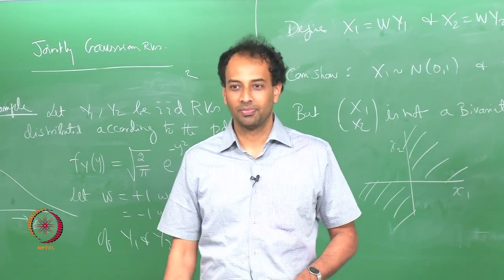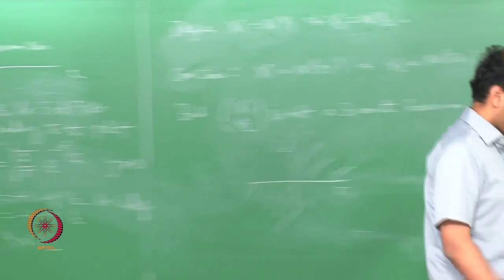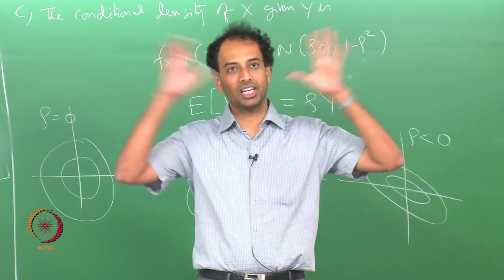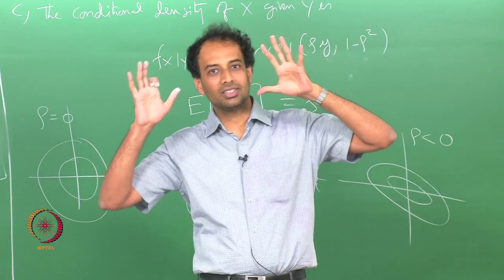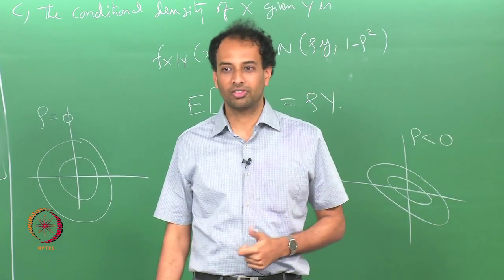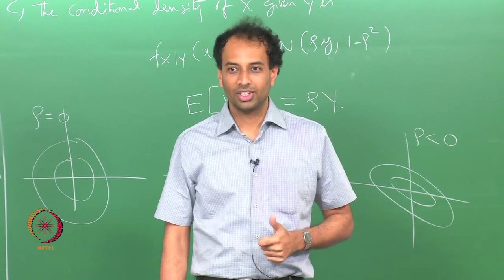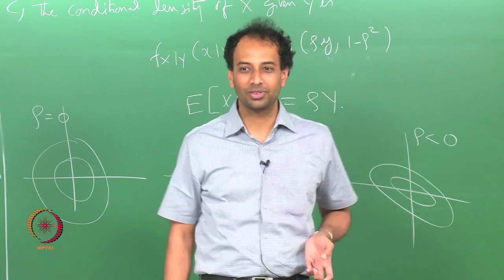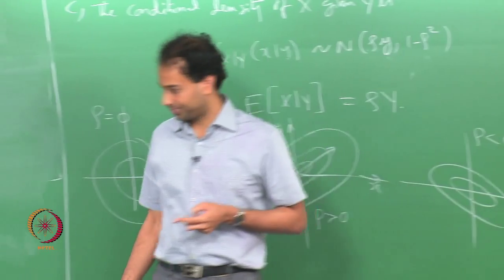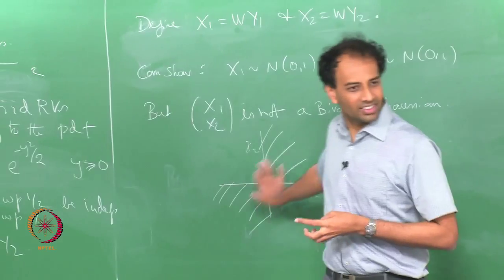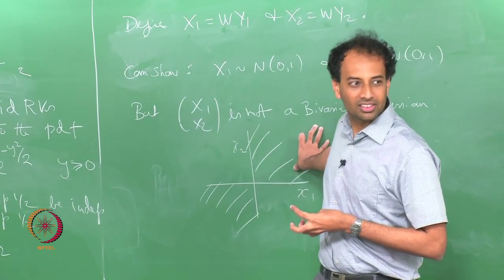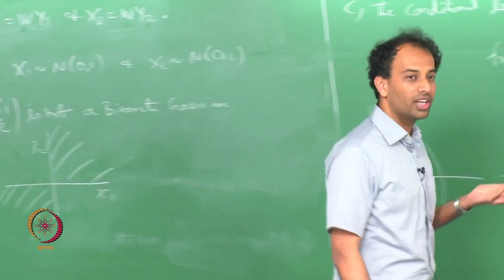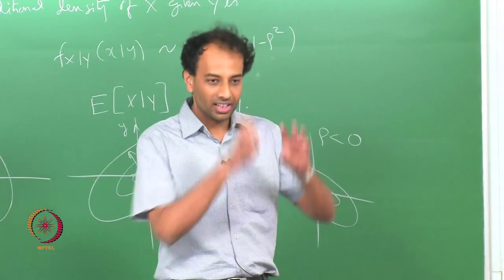We will also talk about joint Gaussians in n dimensions where the density may exist in a subspace of k dimensions — in that case you just treat it as a k-dimensional Gaussian. This example is very instructive because it says that bivariate Gaussian means more than saying they are marginally Gaussian.